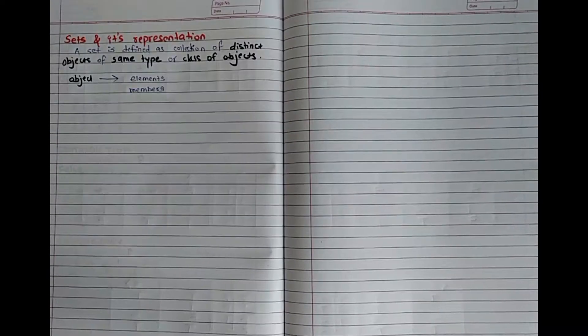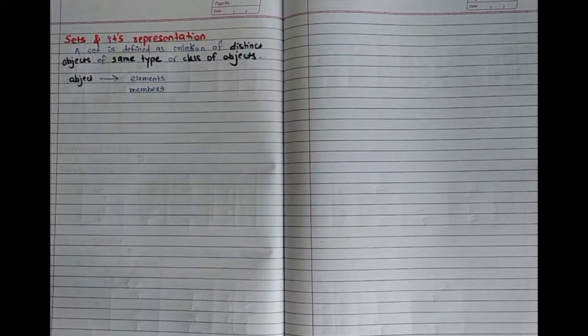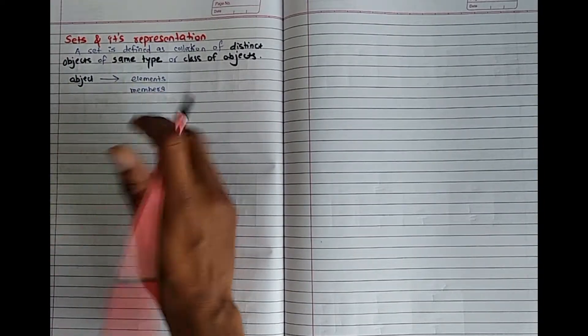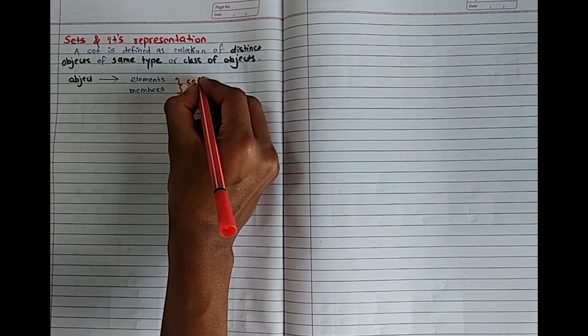Hello friends, in this video we are going to learn about what is sets and what are its different representations. A set is defined as a collection of distinct objects of same type or class of objects, and an object in a set is called an element or member of a set.